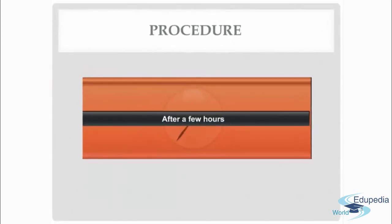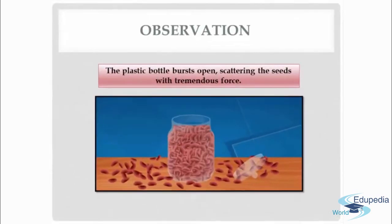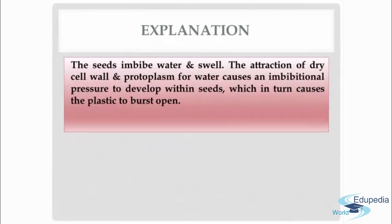After a few hours, what do we observe? We observe that the plastic bottle bursts open, scattering the seeds with tremendous force. The explanation is that the seeds imbibe water and swell. The attraction of the dry cell wall and protoplasm for water causes an imbibitional pressure to develop within the seeds, which in turn causes the plastic to burst open. This experiment must have given you a better picture about imbibition.